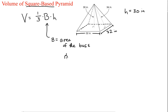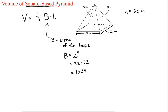What we need to do is figure out how to calculate the area of the base. To do that, you need to know what kind of shape the base is — in this case it's a square. The area for a square is side times side, so 32 times 32, which is 1024. So that is your capital B.